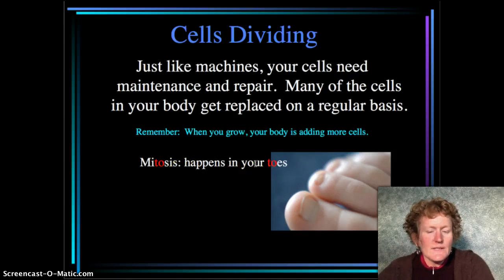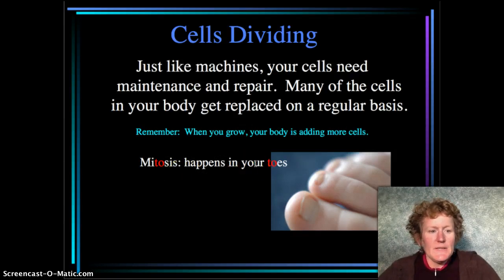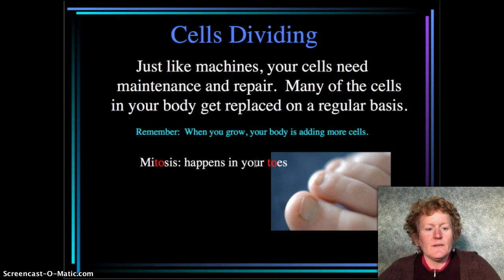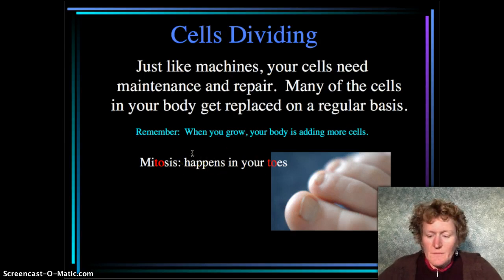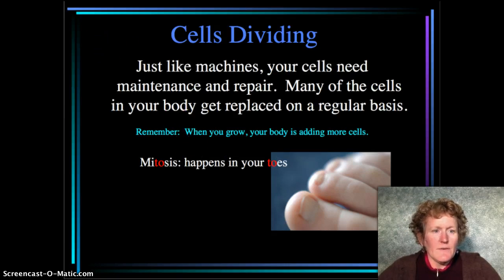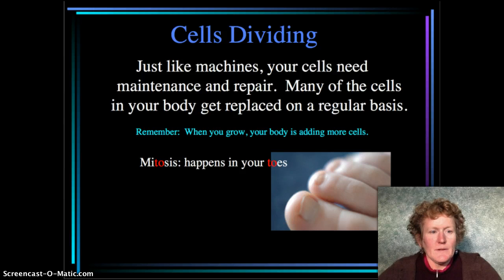Mitosis is an everyday occurrence. It happens in your toes, in your nose, in your ears, in your eyes — it's everywhere. Meiosis is a different process, and we'll talk about that in another chapter.